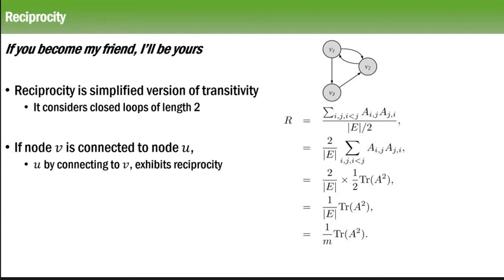Rewrite as 2 by cardinality of E multiplied by 1/2 Tr(A²). Now what is this Tr? Tr is nothing but the trace of a matrix. So 1 upon E, Tr(A²). This 2 is cancelled, right? So in short it is written as 1 upon m, Tr(A²). What is m? M is the number of edges in a graph or in a network.